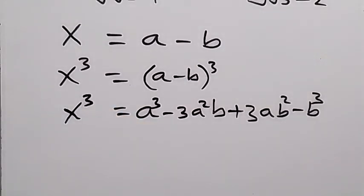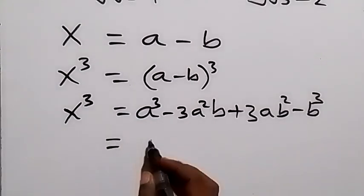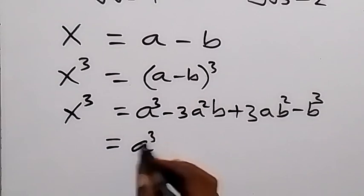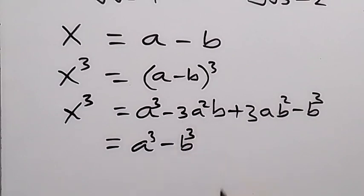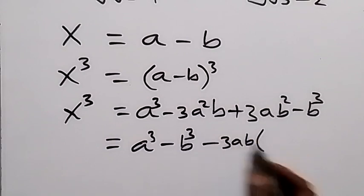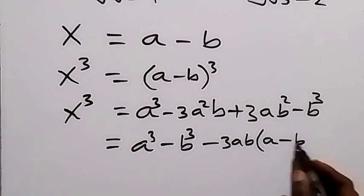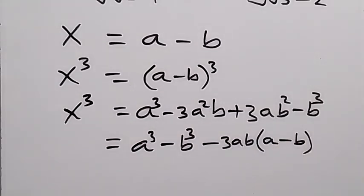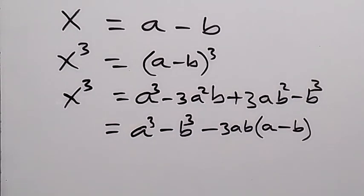From here, let's take a³ and b³ together, giving a³ − b³. Then we can factor out 3ab, leaving minus 3ab times (a − b). From here we can substitute the value of a.